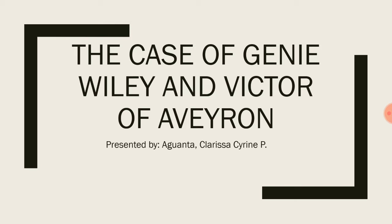Good day everyone. Today we're going to talk about the case of Genie Wiley and Victor of Aveyron. Both of these children are cases of feral children. A feral child is a term used to describe children who grew up isolated from society or human communities. These kids have never been able to learn language, education, and rules for acceptable human behavior. Genie Wiley and Victor are examples of feral children, and we are going to learn about them today and why they are such a big part of the study of language acquisition.